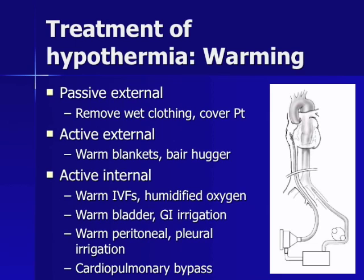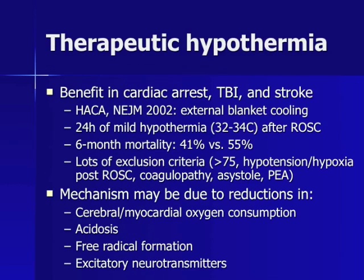An important side note concerns therapeutic hypothermia, a new strategy for optimizing post-cardiac arrest patient outcomes. In 2002, the Hypothermia After Cardiac Arrest Study Group published a landmark study in the New England Journal of Medicine proving that mild therapeutic hypothermia could reduce mortality and long-term disability in cardiac arrest patients. External blanket cooling was used to induce 24 hours of hypothermia after return of spontaneous circulation. The exclusion criteria were strict: no patients greater than 75 years were included, and only V-fib and pulseless V-tach arrest were included. The six-month mortality was 41% in the hypothermia group versus 55% in the normothermia group. The mechanism almost certainly involves a reduction in cerebral and myocardial oxygen consumption, along with reductions in acidosis, free radical formation, and excitatory neurotransmitters.